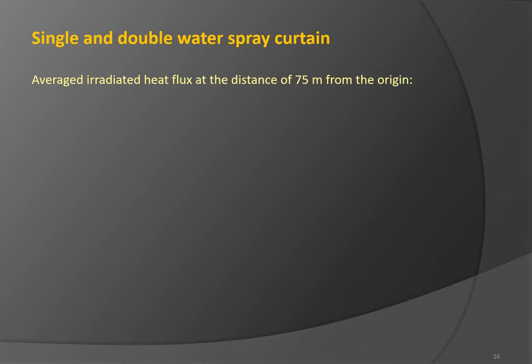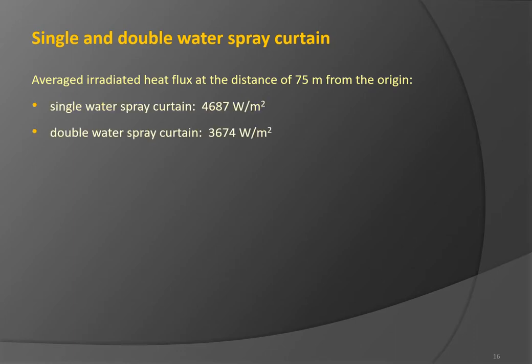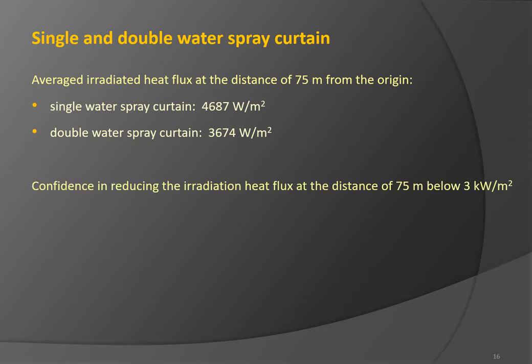To quantify the results, the irradiation heat flux had been averaged over the surface area below the elevation of 9 meters at the distance of 75 meters from the origin. For the single water spray curtain, the irradiation heat flux is 4,687 W/m², and for the double water spray curtain, 3,674 W/m². These results are above, although close to, the required value of 3 kW per square meter. Nevertheless, they do create confidence that the irradiation heat flux at 75 meters can be decreased below 3 kW per square meter. To achieve the imposed requirement, the droplet initial size, their speed, and the related distribution will again become the main focus of the study.